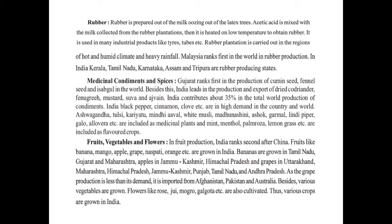Let's take the next topic: fruits, vegetables, and flowers. In fruit production, India ranks second after China. Fruits like banana, mango, apple, grape, pear, orange, etc. are grown in India. Bananas are grown in Tamil Nadu, Gujarat, and Maharashtra. Apples in Jammu Kashmir and Himachal Pradesh, and grapes in Uttarakhand, Maharashtra, Himachal Pradesh, Jammu Kashmir, Punjab, Tamil Nadu, and Andhra Pradesh. As grape production is less than its demand, grapes are imported from Afghanistan, Pakistan, and Australia.